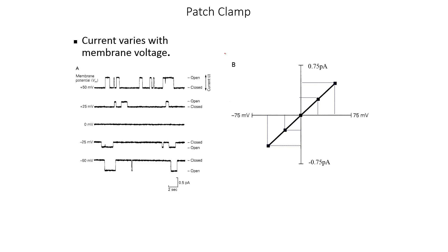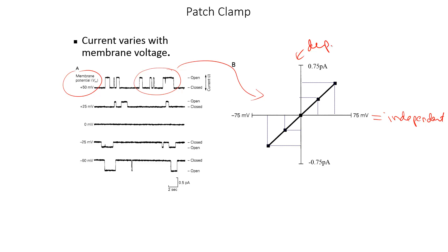We can take these data, in which we know the change of membrane potential and we can measure the amount of current, and plot those on a graph. Remember that the x-axis is equal to your independent variable and your y-axis is equal to your dependent variable. So in this case, the experimenter is changing the membrane potential and recording the current flow — so membrane potential is on our x-axis and current flow is on our y-axis.